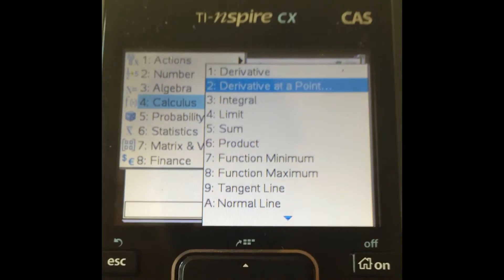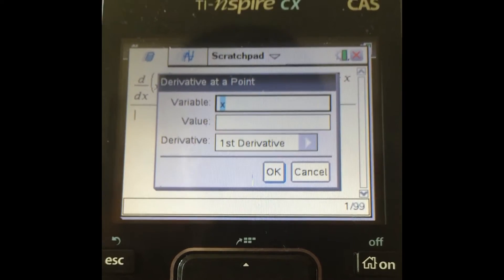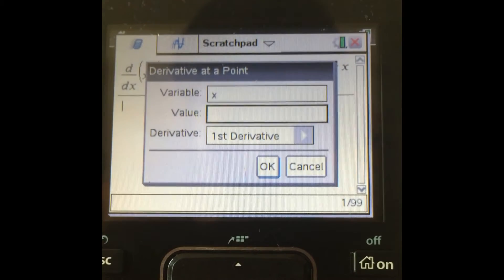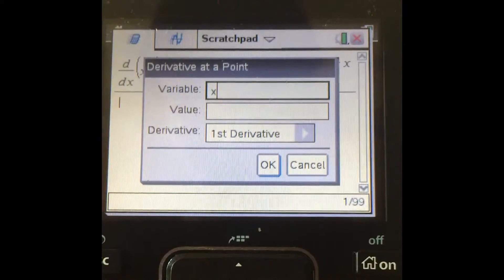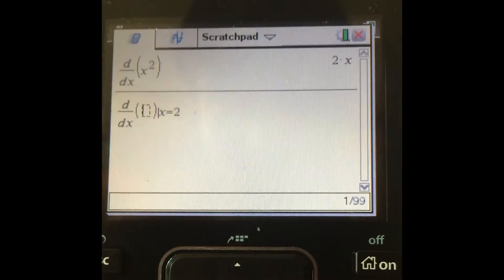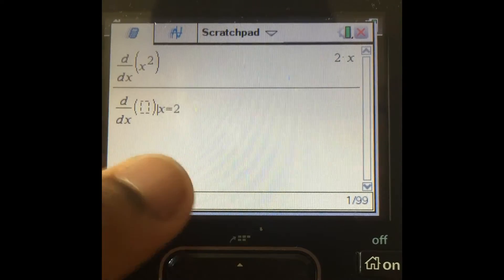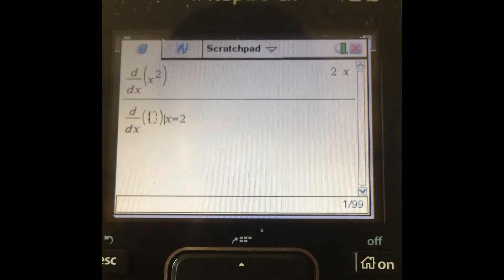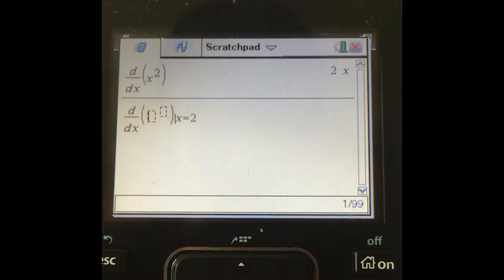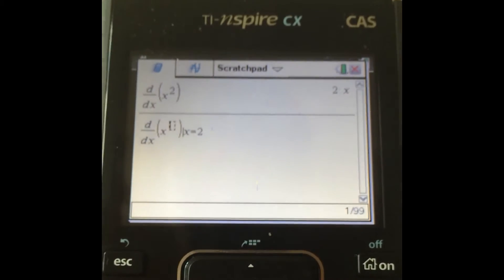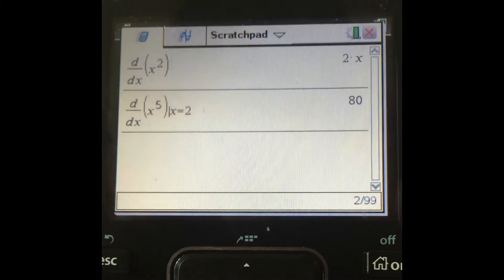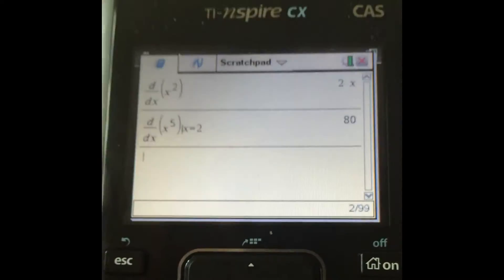Under the calculus, you also have derivative at a point. So let's say you want to find an exact value. So the variable is x, the value at 2. So d/dx of something when x is 2. Let's say we do x to the power of 5. So it gives it to us, the tangent line at that point has gradient 80.